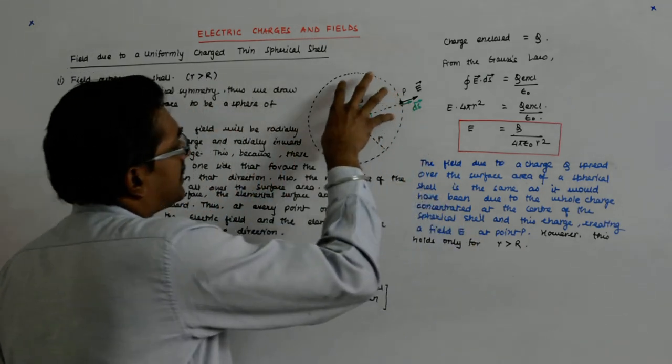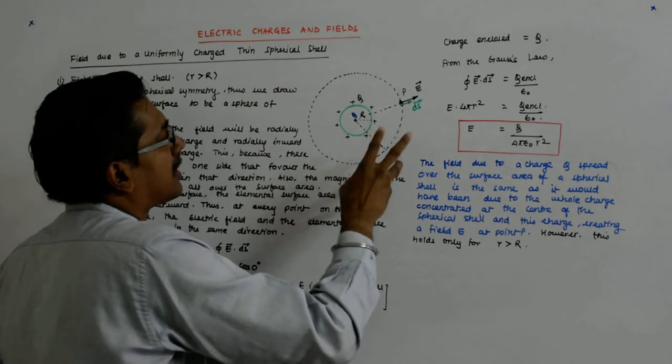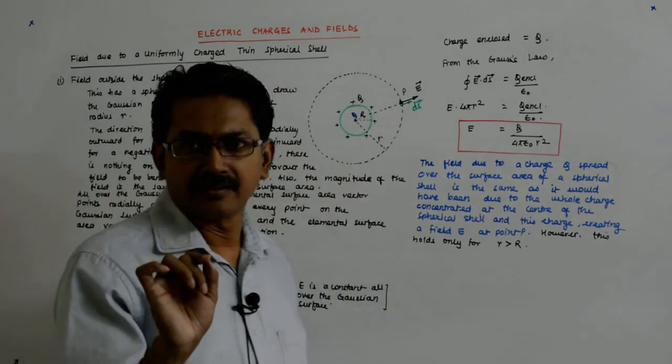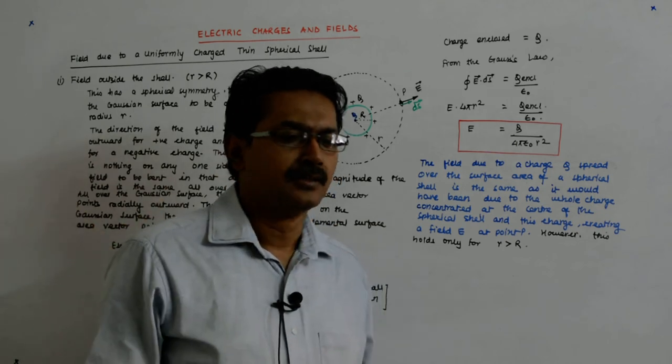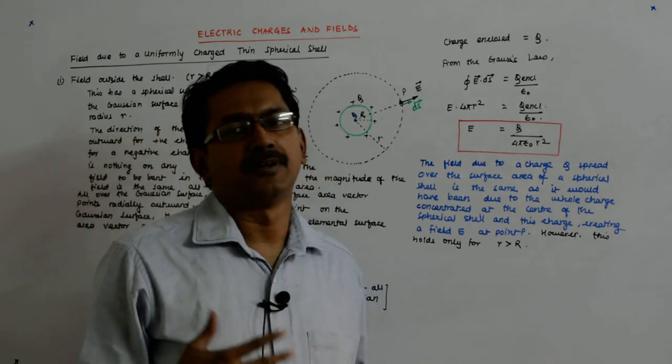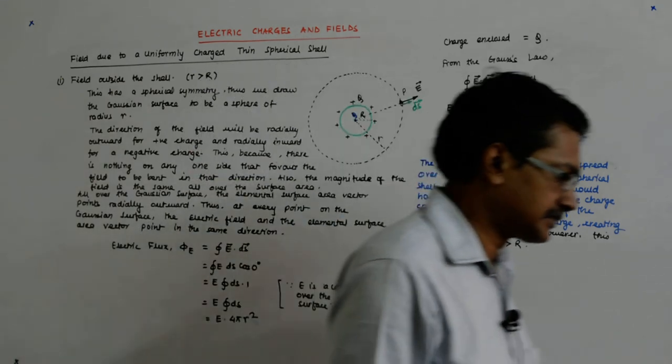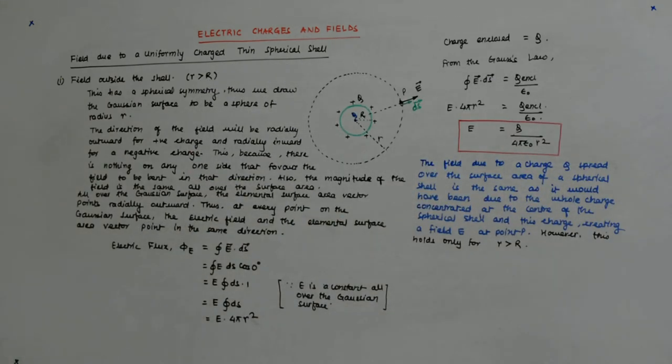So this is easier. Why? Because we just think in our mind that all this charge is collapsed at the center and from there it is producing the field. So it becomes the familiar result for the point charge.